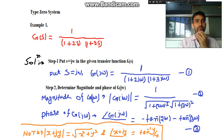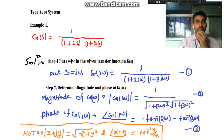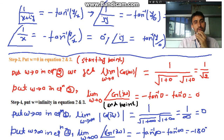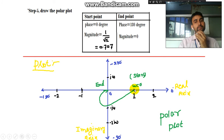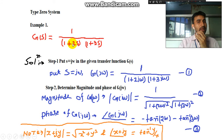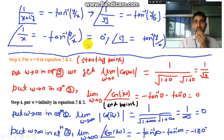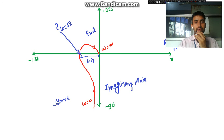For a type 0 system, if you have a transfer function like K / [(1 + τ₁s)(1 + τ₂s)] or similar forms like (s+2)(s+3), the graph will always start from the 0° axis. It will cross the imaginary axis (the -90° axis) if there are two time constants. If there is only one time constant, it will not cross the imaginary axis. The starting amplitude is determined by putting s = 0 into the transfer function.